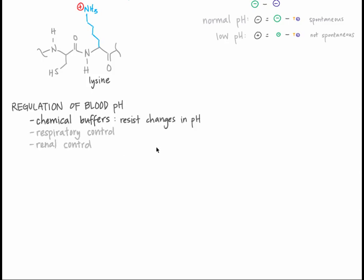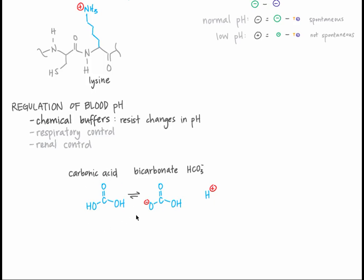Buffers are weak acids or bases that can donate or accept hydrogen ions, depending on the pH. An example of a buffer in our blood is bicarbonate, or HCO3-. Bicarbonate comes from carbonic acid, or H2CO3, which can dissociate into bicarbonate and H+. Carbonic acid is a weak acid, so some carbonic acid molecules give up H+, while others do not. Under normal cell conditions, the ratio of carbonic acid to bicarbonate is about 1 to 10 — for every carbonic acid molecule, there are about 10 bicarbonate molecules and thus 10 H+ ions that came from that dissociation.